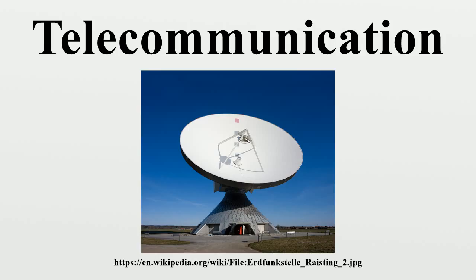A number of key concepts reoccur throughout the literature on modern telecommunication theory and systems. A basic telecommunication system consists of three primary units: a transmitter that takes information and converts it to a signal; a transmission medium, also called the physical channel, that carries the signal — an example of this is the free space channel; and a receiver that takes the signal from the channel and converts it back into usable information.